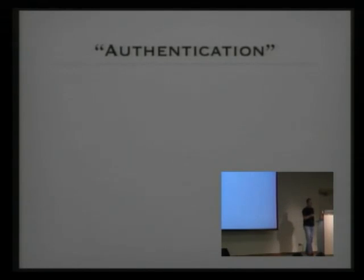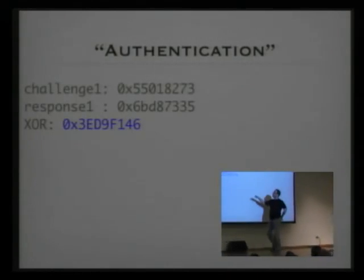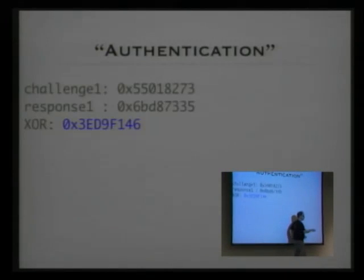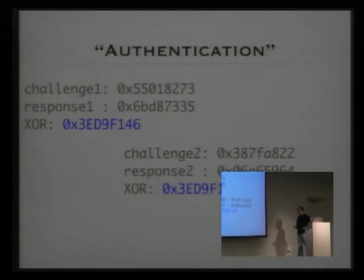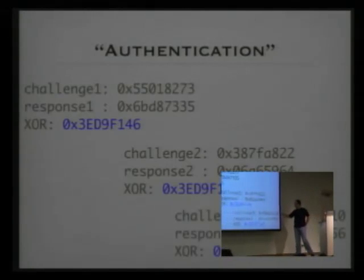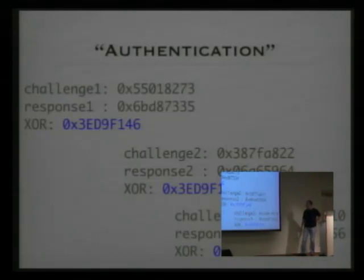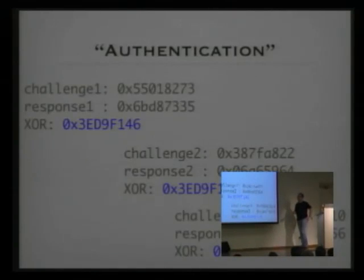The authentication step is rather easy. The controller sends a challenge and the Storm node sends back a response. If you XOR the challenge with the response you receive a certain value, and this same XOR result holds for a second and third challenge-response pair as well. So if you XOR the challenge with the response you always get the same XOR key — this is the key used to authenticate, a very simple scheme to prove you are a legitimate node.